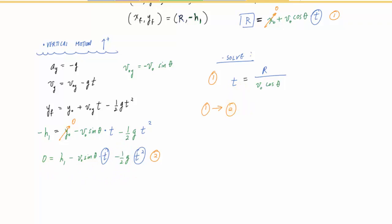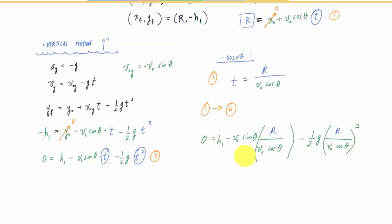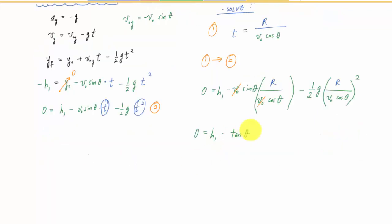Substituting t from equation (1) into equation (2), the V0 terms are going to cancel out — that's convenient. Now if I simplify this equation: sin(θ) over cos(θ) is tan(θ). All right, now I can set up a solution for R.